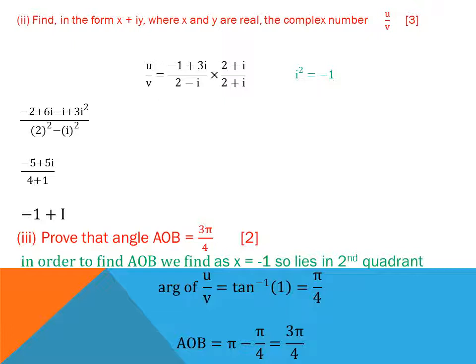Part three: prove that angle AOB = 3π/4. The angle AOB equals the argument of u/v. From the previous part, u/v = −1 + i. The basic angle is tan⁻¹(1/1) = π/4. Since the real part is −1 (negative) and the imaginary part is +1 (positive), the point lies in the second quadrant. So angle AOB = π − π/4 = 3π/4, as required.